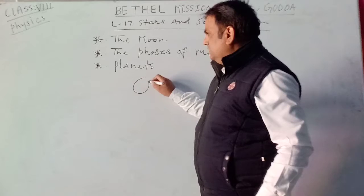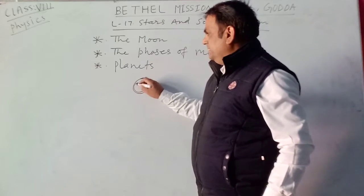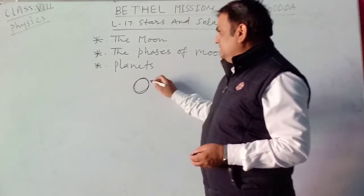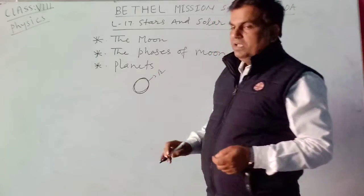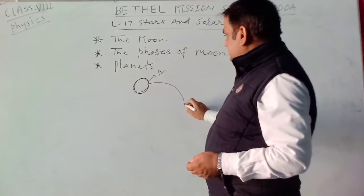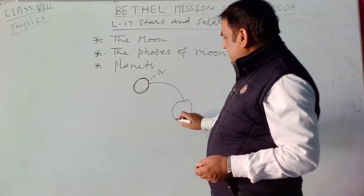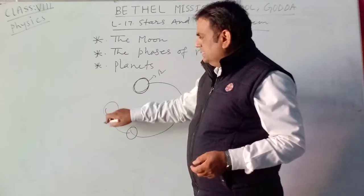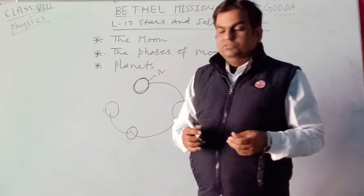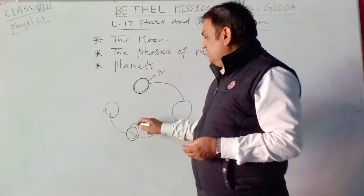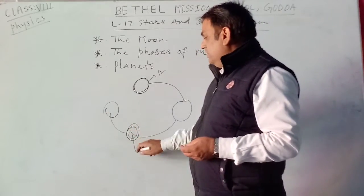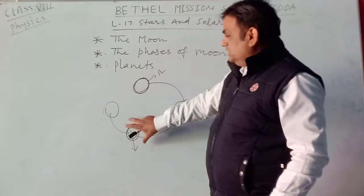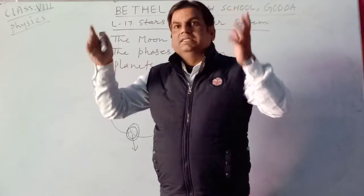The first phase is full moon — when the moon appears fully bright in the sky, we call it full moon, or Poornima. The second is half moon, then no moon, and crescent moon. These are the different phases. The no-moon phase is known as Amavasya, which means there is no moon visible in the sky.